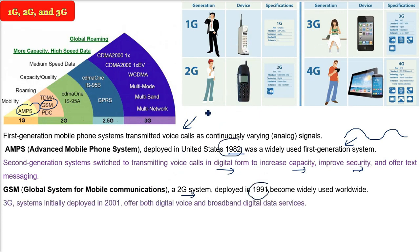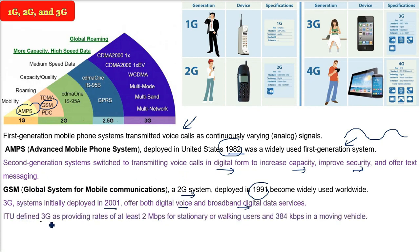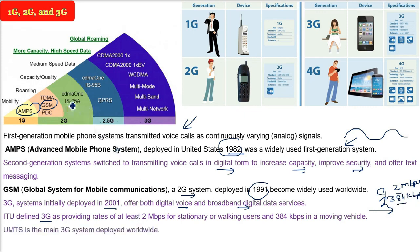3G was initially deployed in 2001 and gave both digital voice and broadband digital data services. ITU (International Telecommunication Union) specified that for 3G, when standing still you must get at least 2 Mbps, and when moving — walking or on a train — at least 384 kbps. In between 2G and 3G, CDMA One and GPRS systems came under what is called 2.5G.